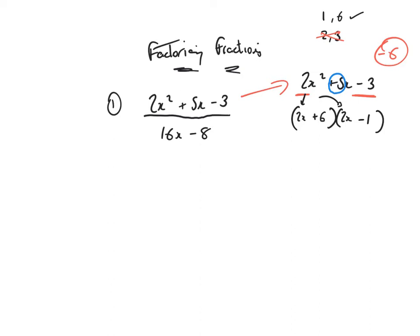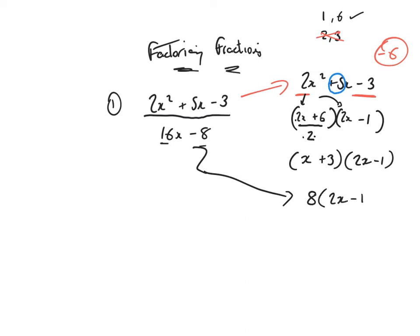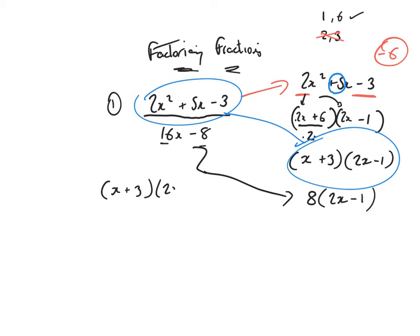I can take out a common factor from the first bracket — a common factor of 2. 2 into 2x goes x and 2 into 6 goes 3. The second bracket I can't take a common factor of. Now factorising the bottom: that's highest common factor — from 16 and 8 I can take 8, giving 8 bracket 2x minus 1. Bringing it back in: the top factorised to x plus 3 bracket 2x minus 1, and the bottom is 8 bracket 2x minus 1. The (2x minus 1) cancels, leaving x plus 3 over 8. Final answer.